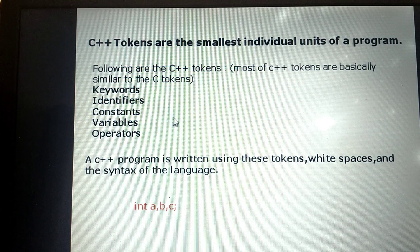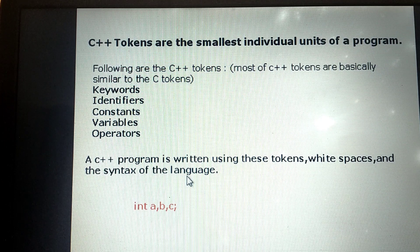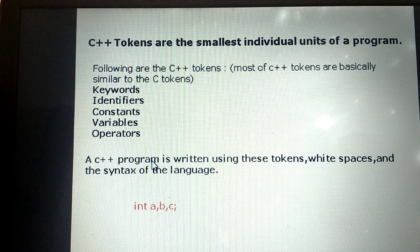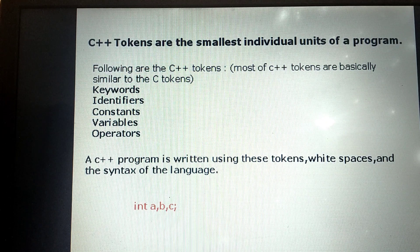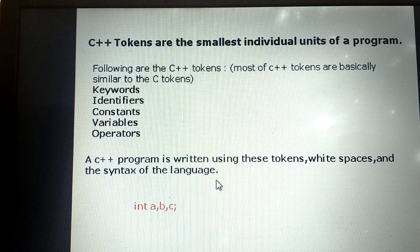A C++ program is written using these tokens, white spaces and the syntax of the language. A program is a set of instructions written logically. These instructions are written using tokens, white spaces and the syntax of the language.